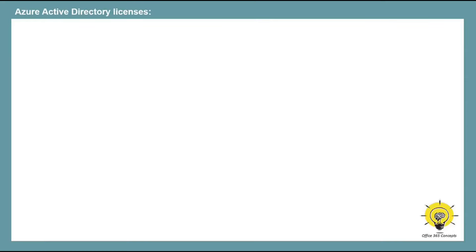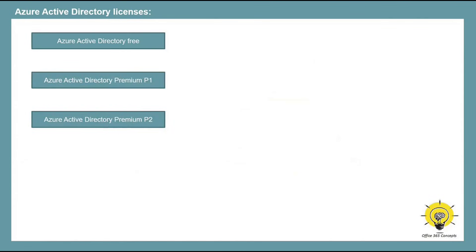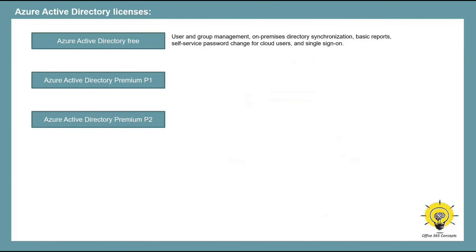When you subscribe for an Office 365 tenant, you automatically get Azure Active Directory and you get access to all the free features. The free subscription provides users and groups management, on-premise directory synchronization, reports, self-service password change for cloud users, and single sign-on for Office 365 and Azure services.